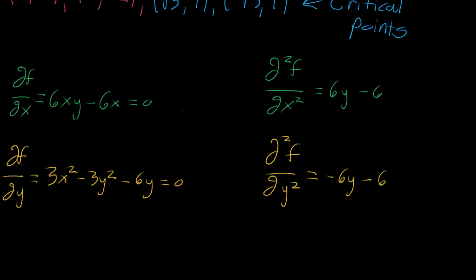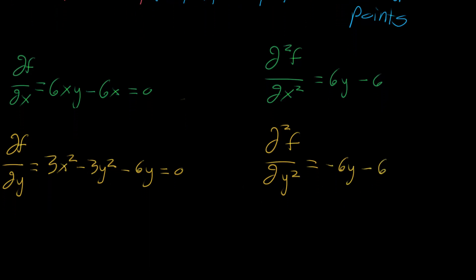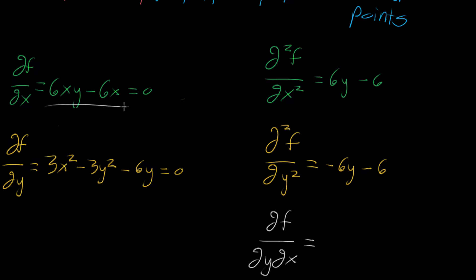We can't forget that last crucially important mixed partial derivative term, which is the partial derivative of f where first we do it with respect to x and then with respect to y. The order doesn't really matter in this case since it's a perfectly ordinary polynomial function. Taking a look at this and differentiating with respect to y: the derivative of the first term with respect to y is six x, and the second term looks like a constant with respect to y, so that's all we have.